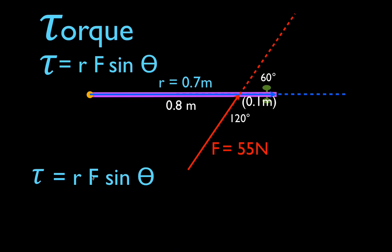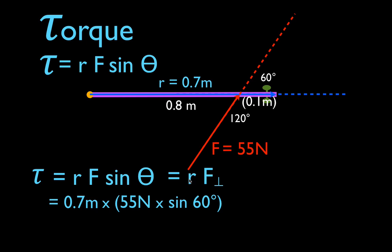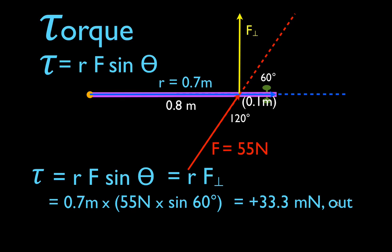So I calculate R·F·sin(θ): R is 0.7 meters, F is 55, and theta is 60 degrees. When I multiply F times sine of theta, I'm finding the component of the force perpendicular to R, because only that component produces torque. 0.7 times 55 times sine of 60 gives us 33.3 meter-newton. The object rotates counterclockwise — positive torque — and the torque vector points out of the board. Note that you could also use 120 degrees, since sine of 60 and sine of 120 are equal, but I prefer to move the vector to the side where the object is moving and use that angle as theta.